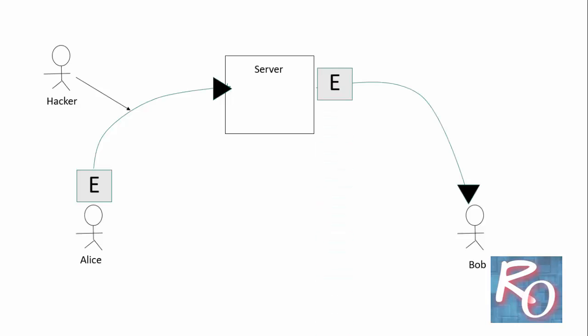The main drawback of this method is that a person working at the server gets to know the messages being sent from Alice to Bob, since messages are decrypted and saved at the server. Also, since the hacker cannot tap the communication line, they can directly hack the server and get to know the communication happening between Alice and Bob.